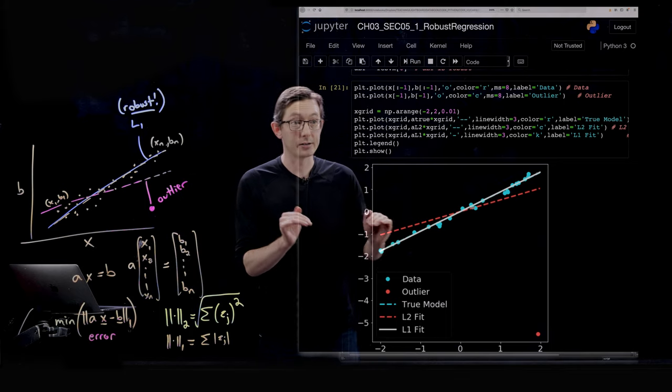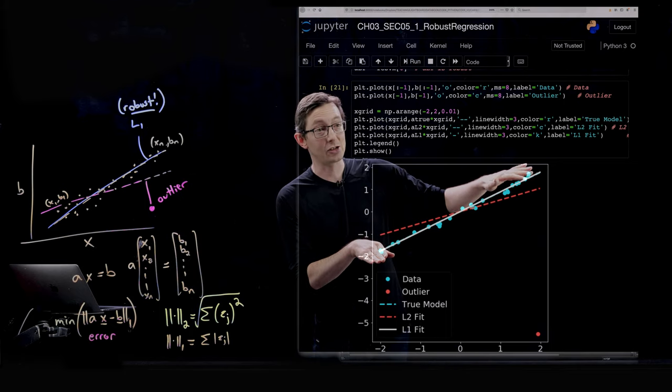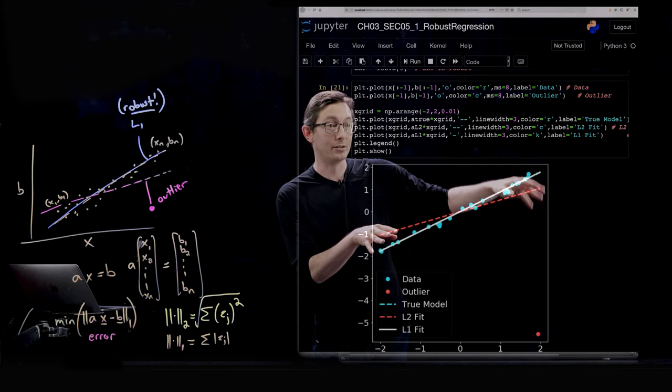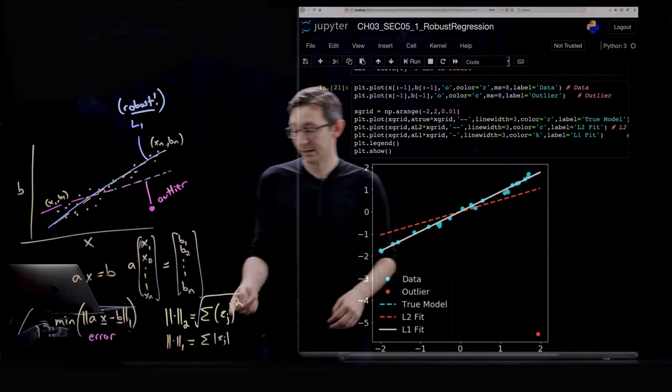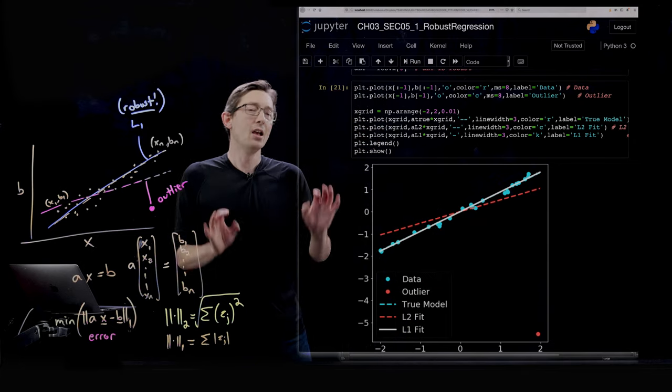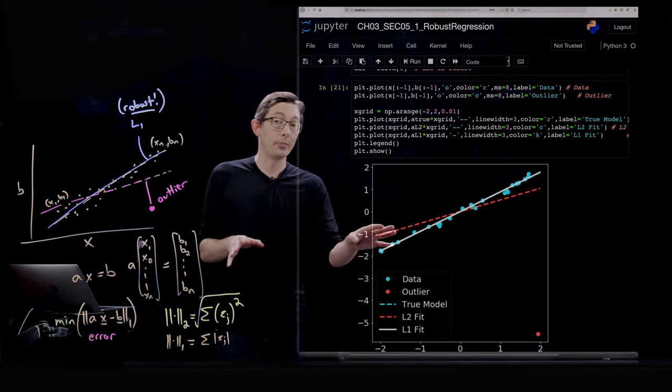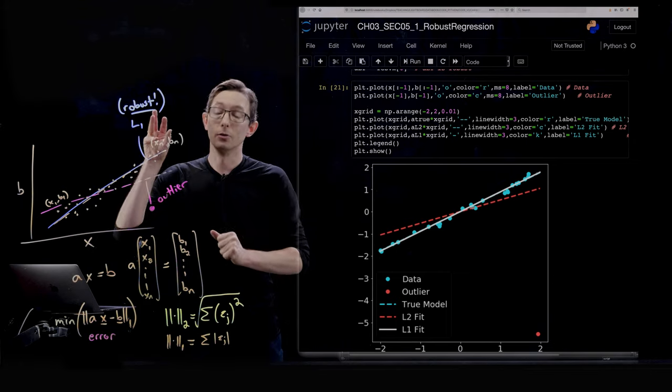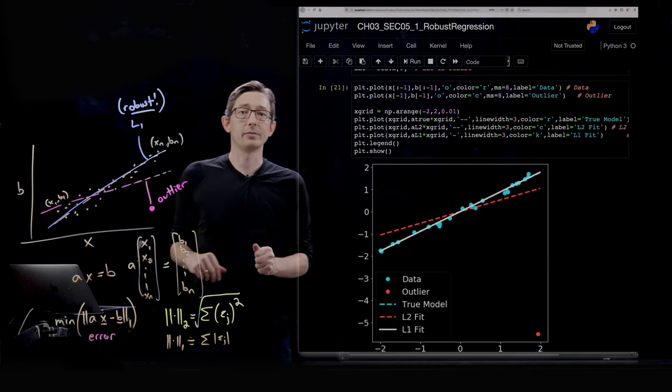And this is because we're not squaring our error. So we're not squaring our errors. And so it is strongly incentivized to stay pinned to the true data points because if it moved away, it wouldn't help it in this one norm error. So this is really cool. The one norm adds a tremendous amount of robustness to outliers.